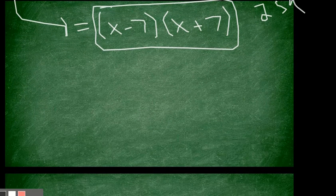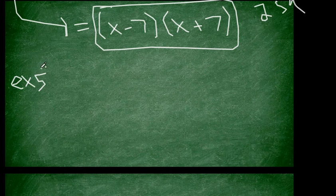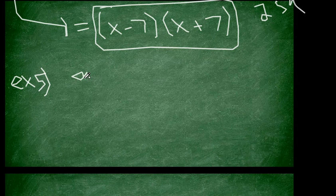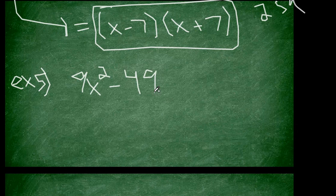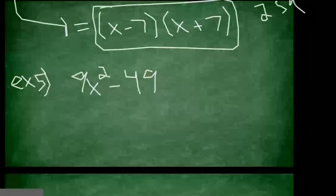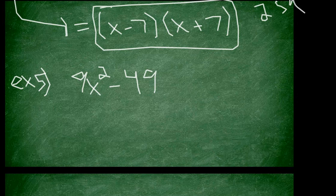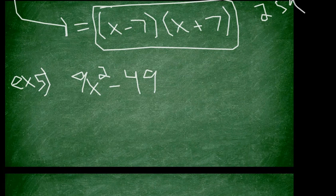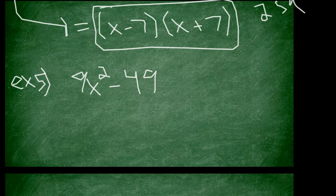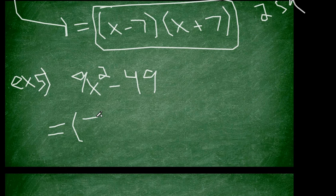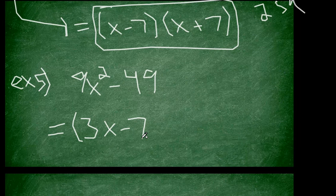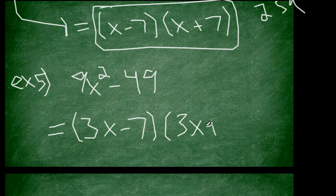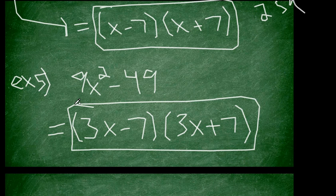So now let's revisit that last problem that I started to write. So we are on example 5. We have 9x squared minus 49. So actually, this is also a difference of 2 squares because I have 9 as a perfect square, 3 squared is 9, x squared is a perfect square, x squared gives me x squared, and 7 squared is 49. So you can kind of guess that the factorization would end up being 3x minus 7 times 3x plus 7. So you kind of see that nice pattern there.